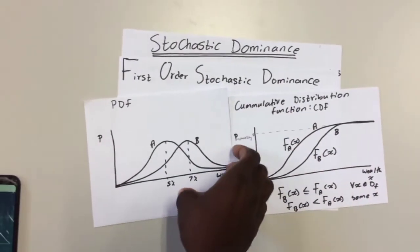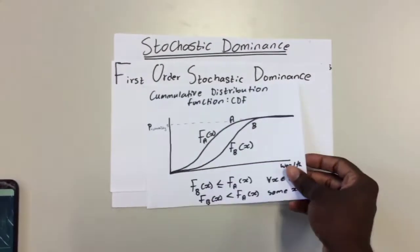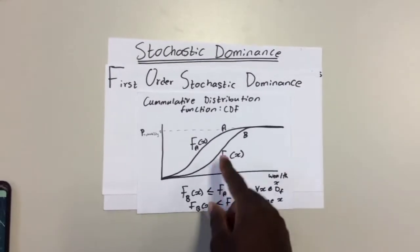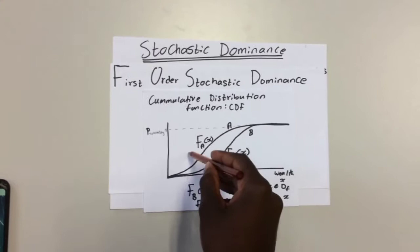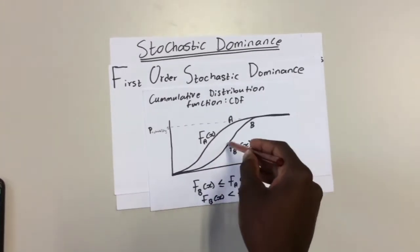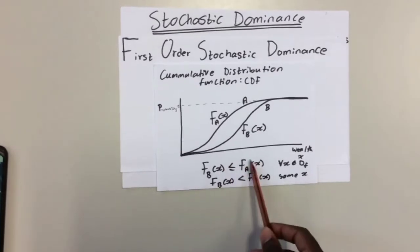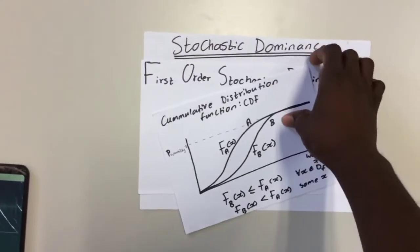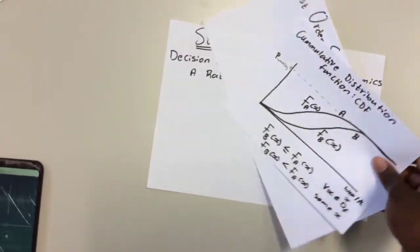Basically, if you prefer more to less, you will obviously choose B over A because it has higher return than A and they have equal variance. But most importantly, the decision on first order stochastic dominance is based on the CDF. When you want to make that decision, you basically just have to look at the CDF. That's why this is very important.